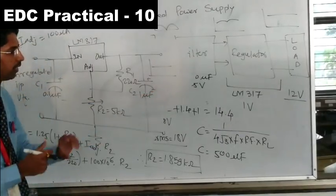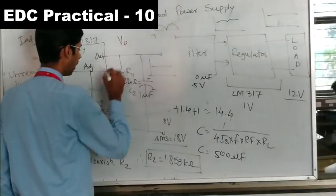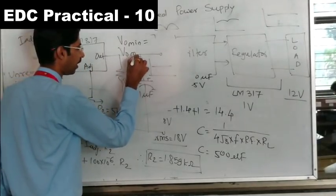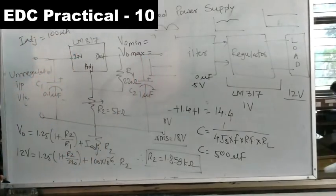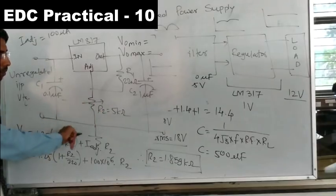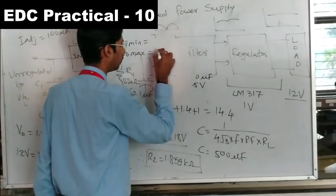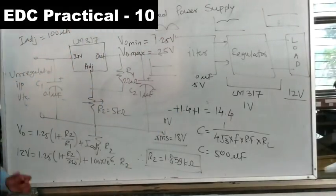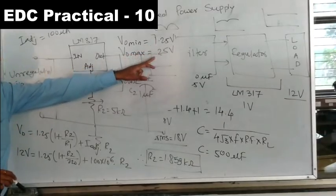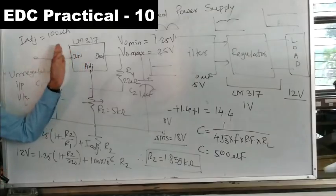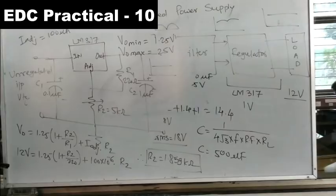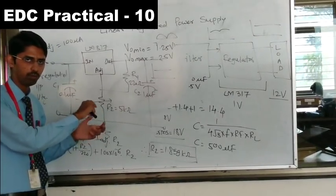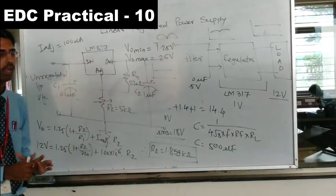We can also vary R2 to its minimum and maximum values to find the output voltage range of the LM317. When R2 is minimum, the maximum output voltage is 25V. When R2 is maximum, the minimum output voltage is 1.25V. Therefore, the LM317 output voltage range is 1.25V to 25V, which we verify by varying R2 on the breadboard and reading the DVM.